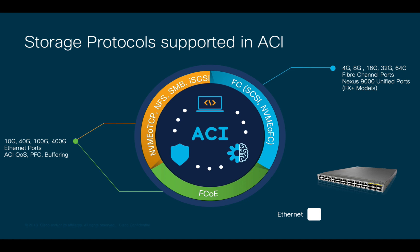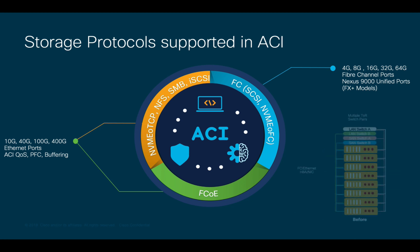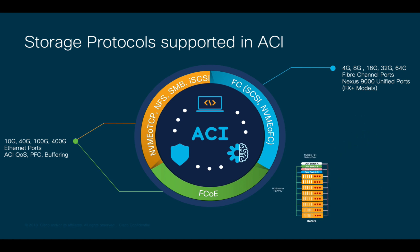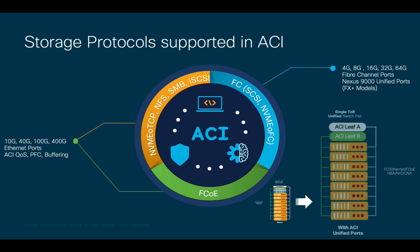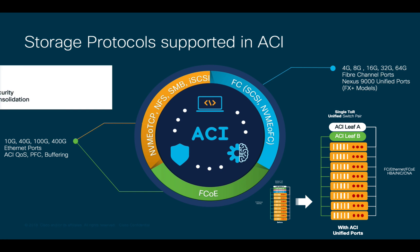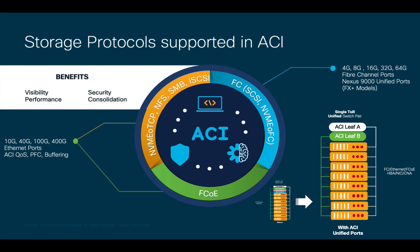All you would need to do in this case is adjust ACI QoS and lossless Ethernet capabilities accordingly. The benefits of consolidating LAN and SAN traffic in the same network or top of rack device is not only a reduction of cabling and devices to manage, but also the visibility, performance, and security that both ACI and Nexus Dashboard can provide.